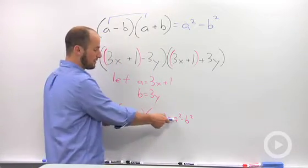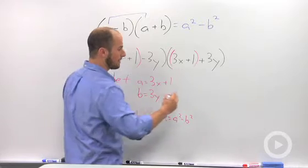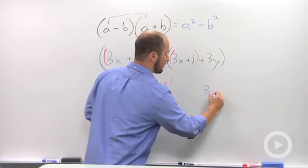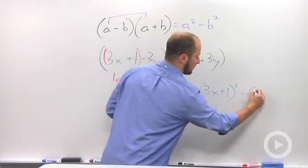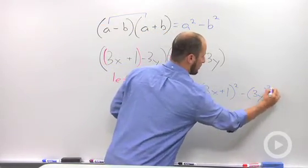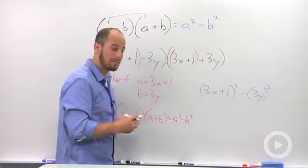More specifically, we know that a is 3x plus 1. So, this turns into 3x plus 1 squared. And our b turns into 3y squared.